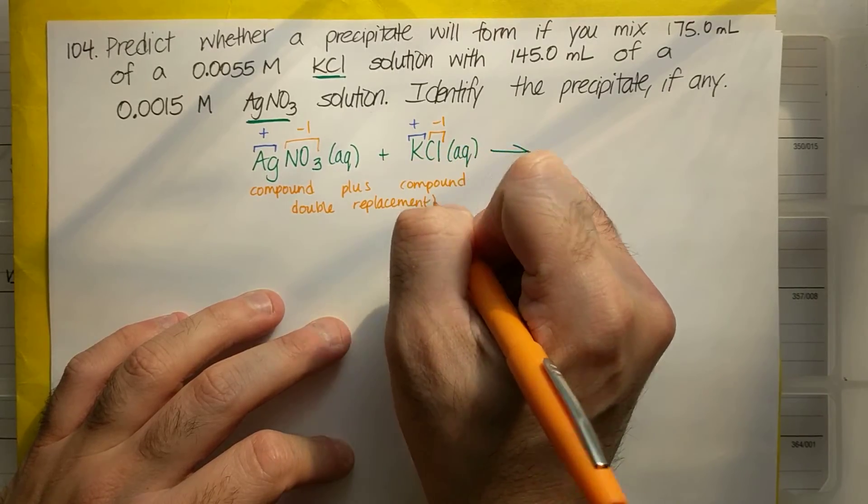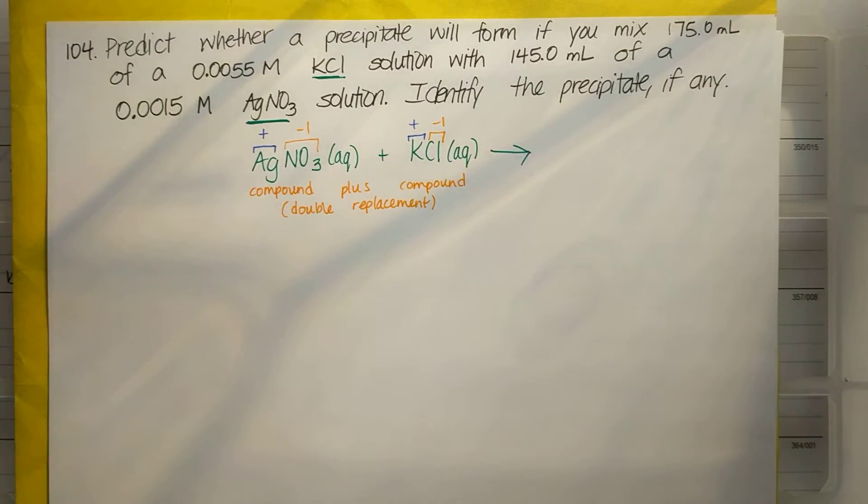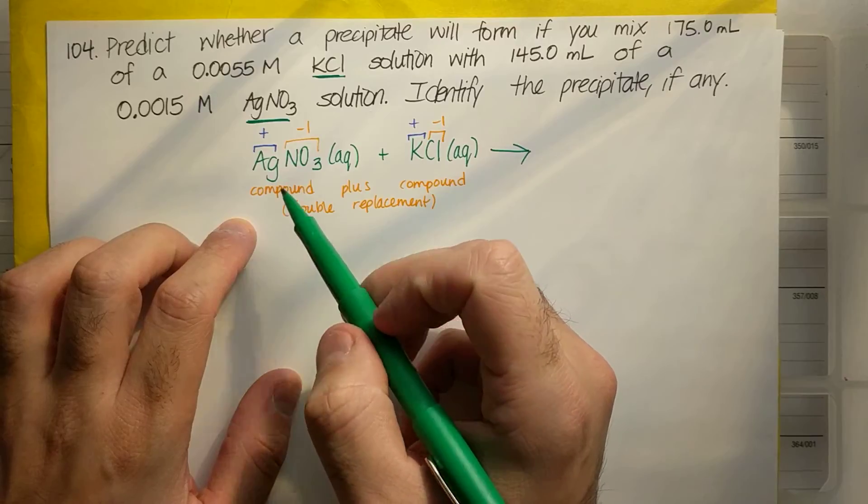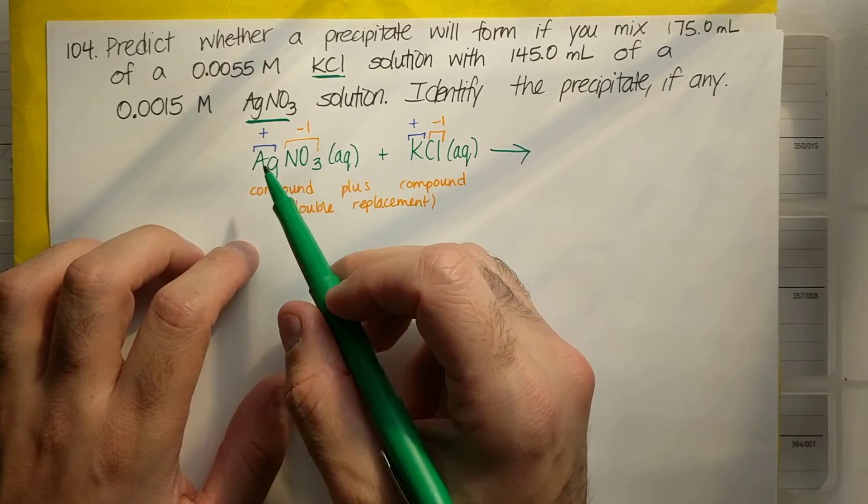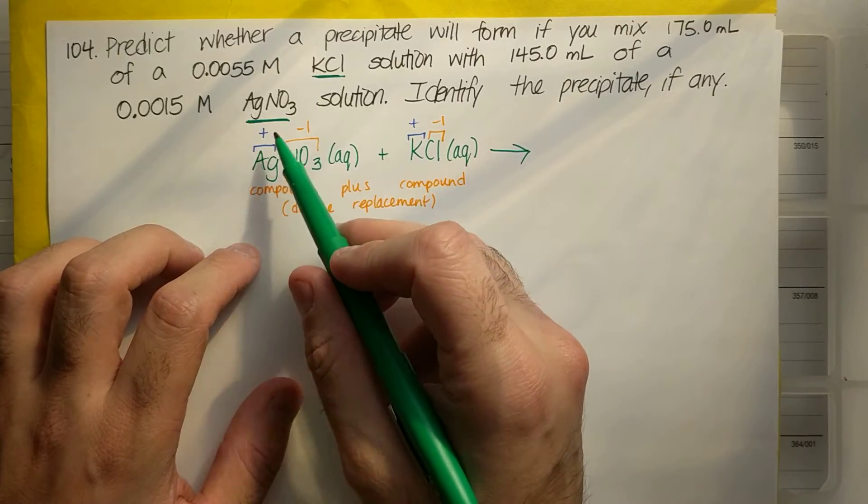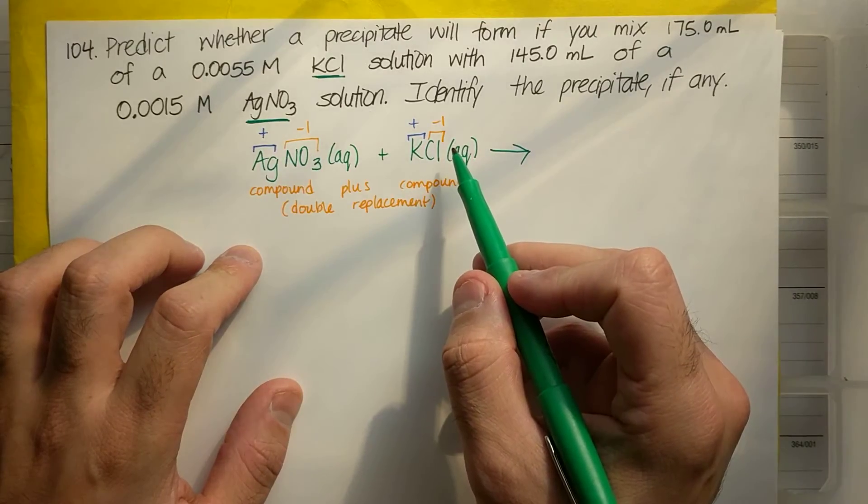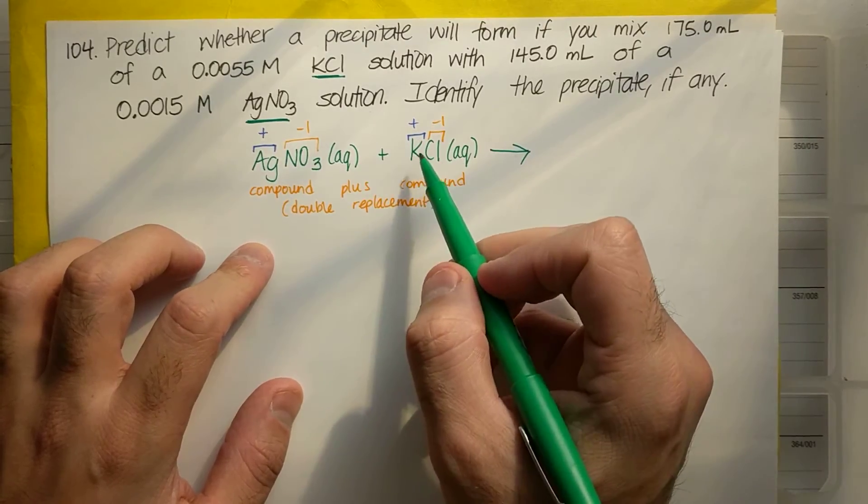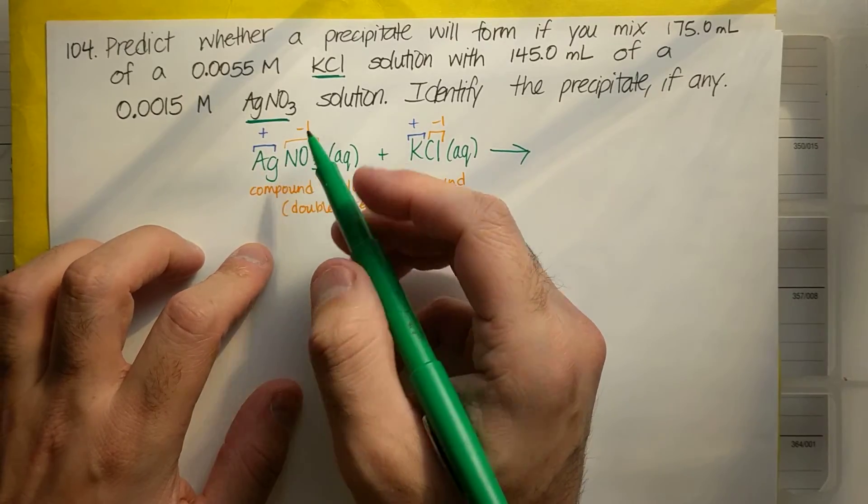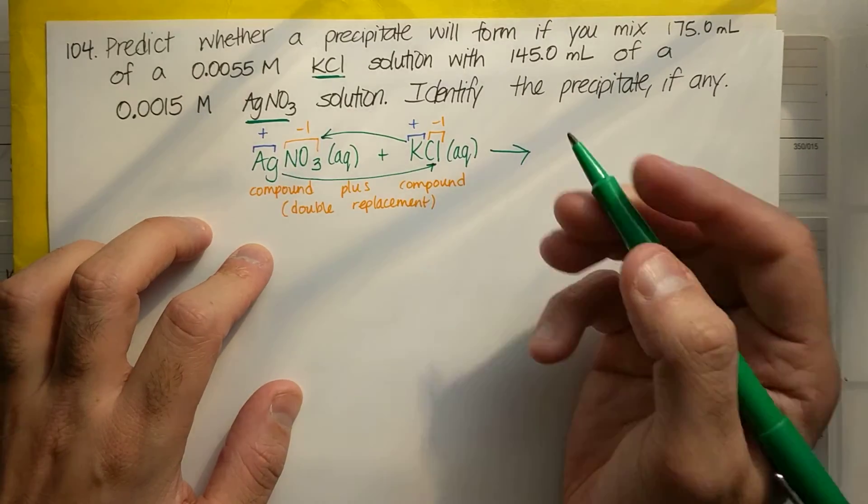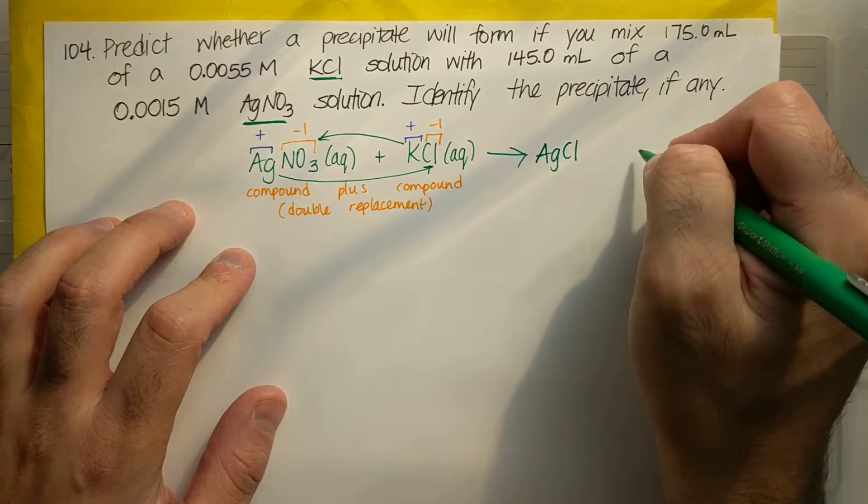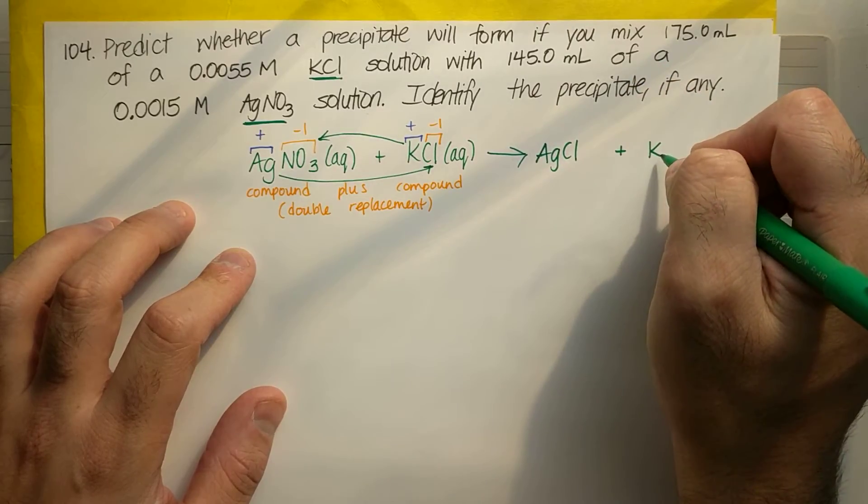So I'm trying to slightly review writing chemical reactions in addition to predicting whether a precipitate will form. So now if I add these two together, in a double replacement, my positive switch place or I say my negative switch place. So everybody switches partners. So instead of Ag being with NO3, Ag plus is gonna go with the Cl because it's minus. And if that happens, then the K plus is gonna go with the NO3 minus. And so I'll write AgCl plus KNO3.